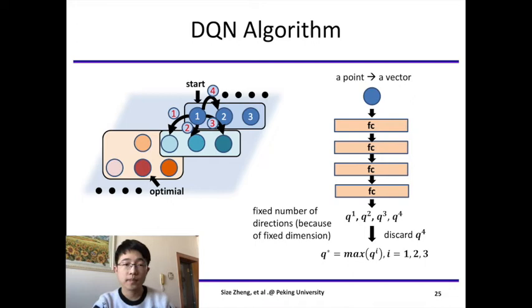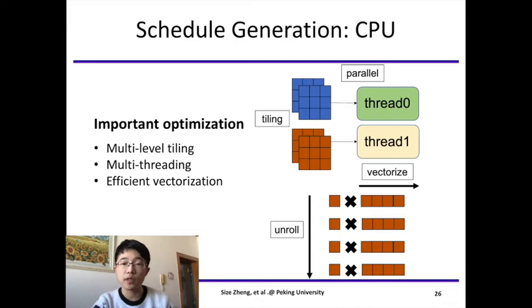Our exploration process finally outputs an optimized schedule configuration. We need to generate real schedule according to such configuration. The schedule generation is customized for different hardware. For CPU, register blocking and vectorization are of critical importance. Register blocking is enabled through multi-level tiling. We use split and reorder primitives to do this. In this case, vectorization is also applied to the innermost loop. The trip counts of the innermost loop are determined by split factors and tuned in the exploration phase.